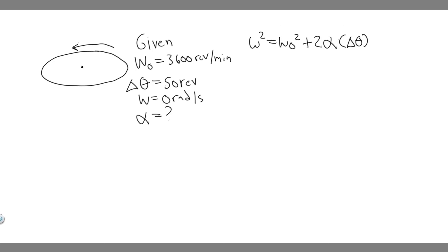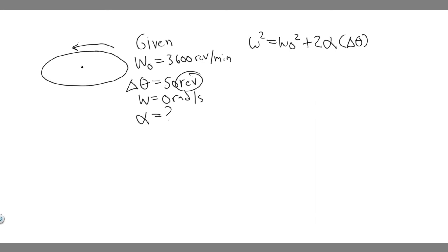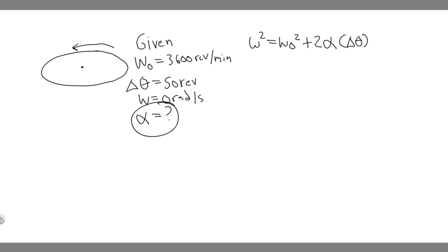All we have to do is plug in the variables we were given into this formula and solve for alpha, the angular acceleration. But notice the units: the initial angular velocity is in revolutions per minute and theta is in revolutions. For this equation, omega must be in radians per second, theta must be in radians, and that will give us alpha in radians per second squared. So we need to convert both of these units first.